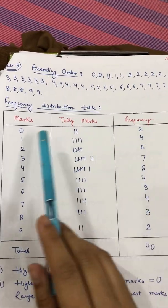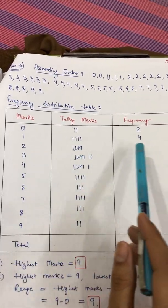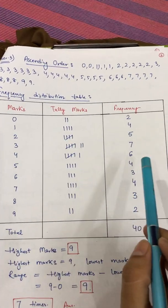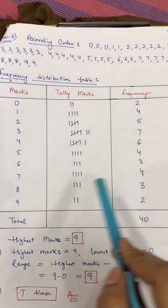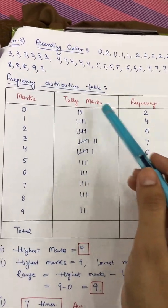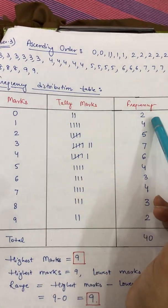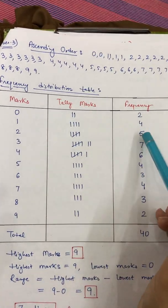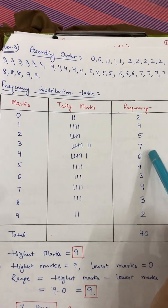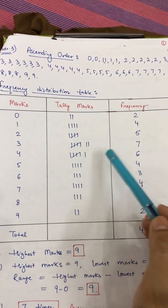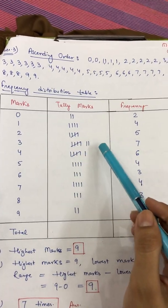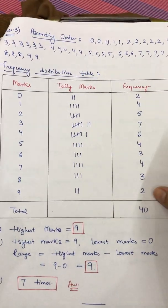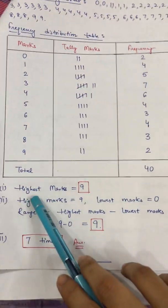Zero is coming 2 times, one is coming 4 times, two is repeating 5 times, three is repeating 7 times, four is occurring 6 times. Write the frequency in the form of tally marks: two means two straight lines, four means four straight lines, five means four lines with a cut, seven means one group of five plus two more, six means one group of five plus one more.